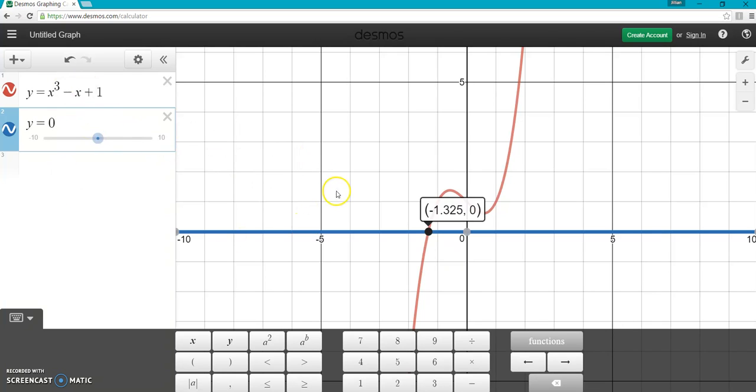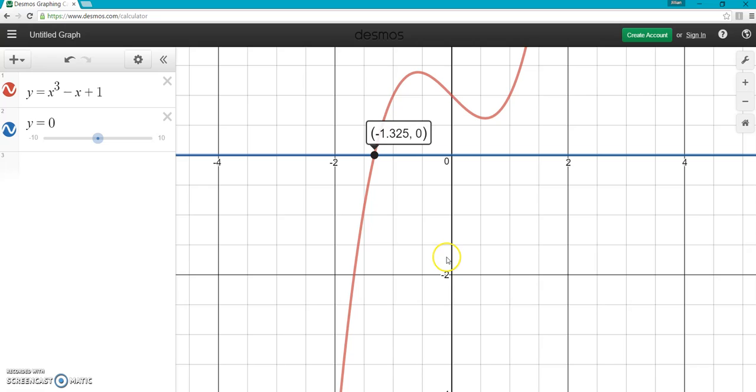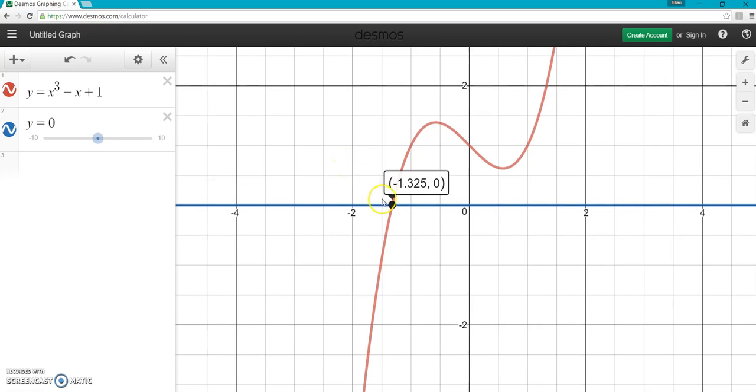We have y = 0. Now we have our cubic function in red and our linear function here in blue. We want to find where they intersect. In this case, they intersect where it's already highlighted because we already highlighted it. But normally all you have to do is just click on it, click where they intersect and it will give you your solution.